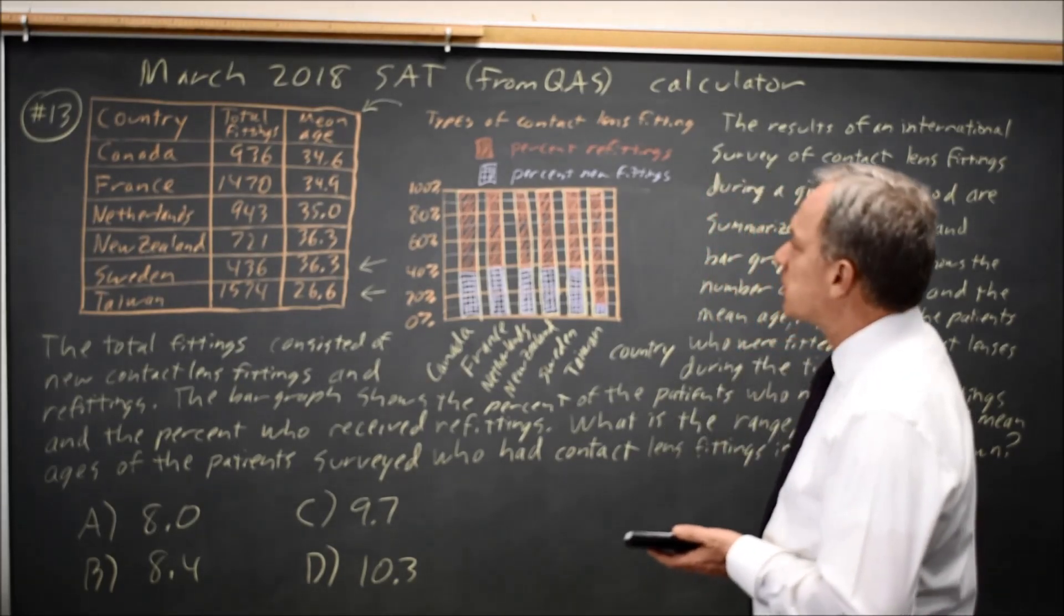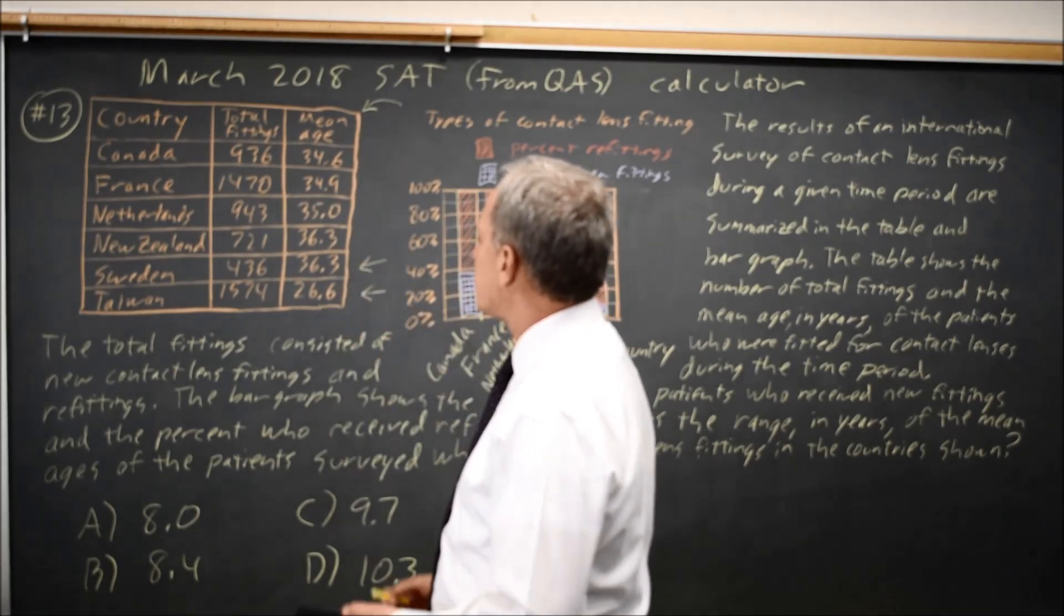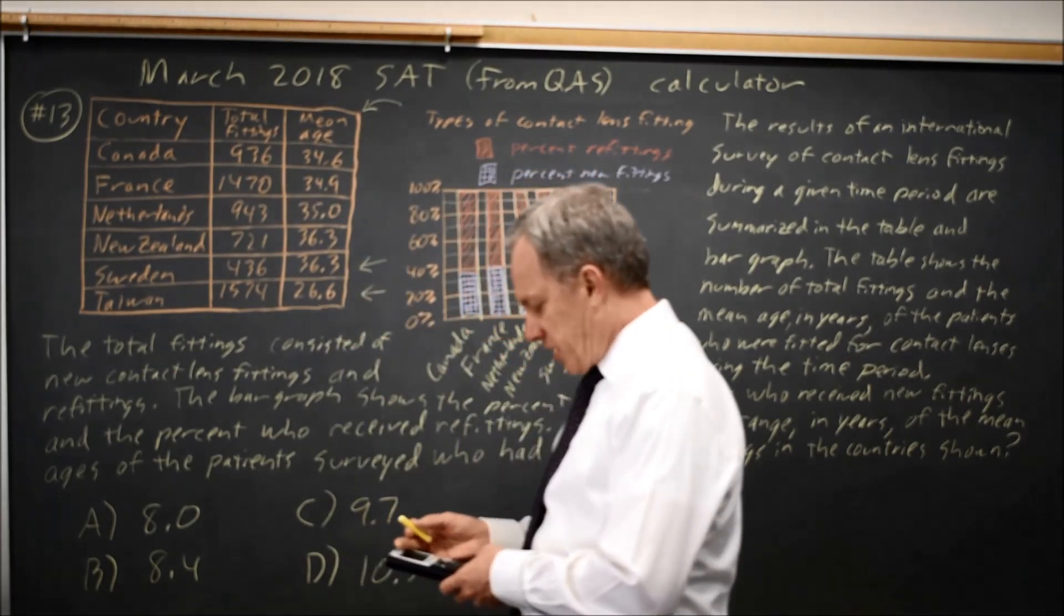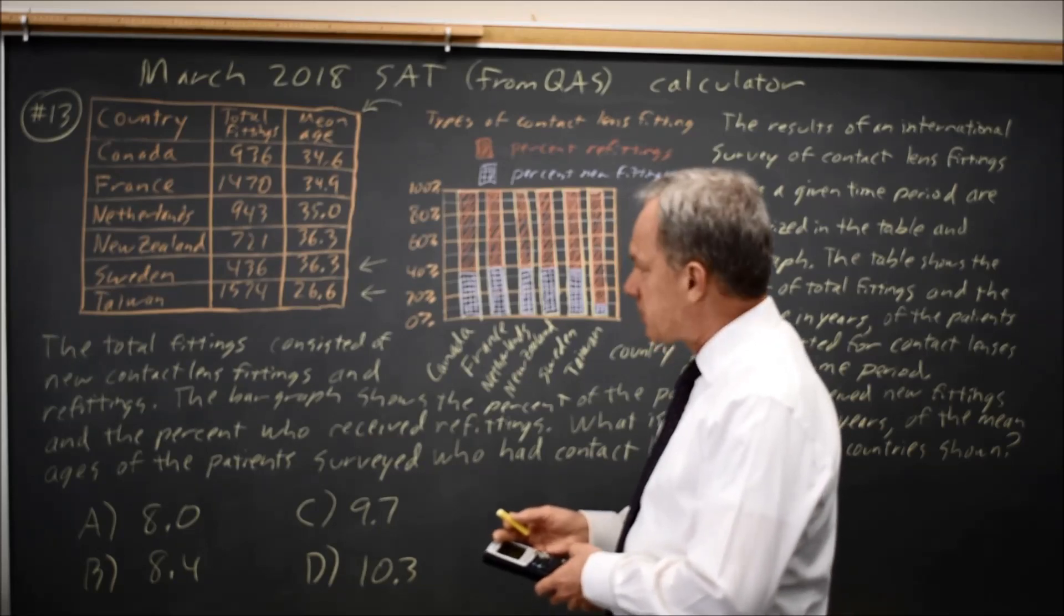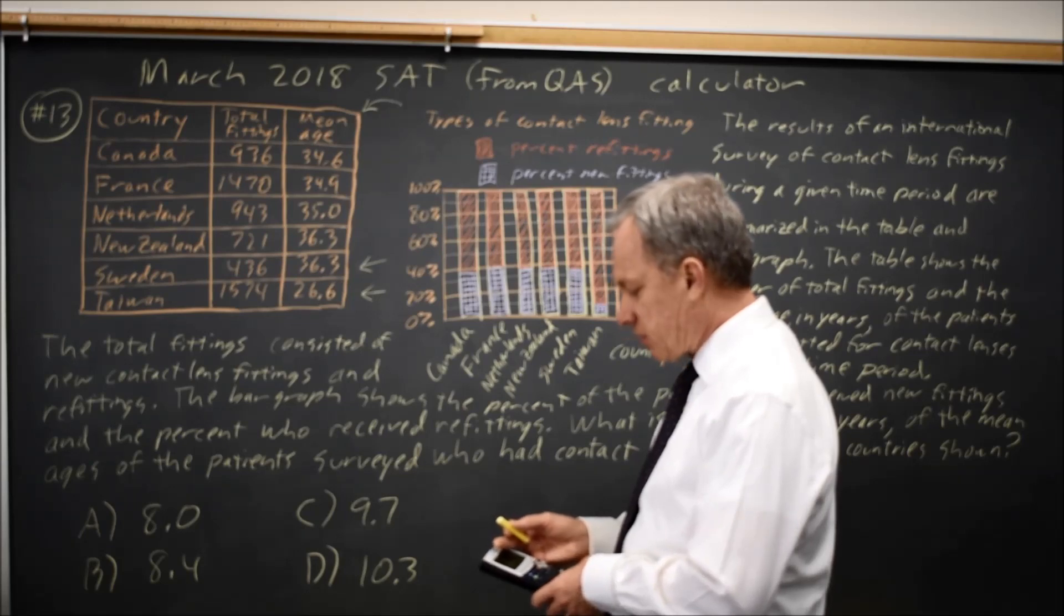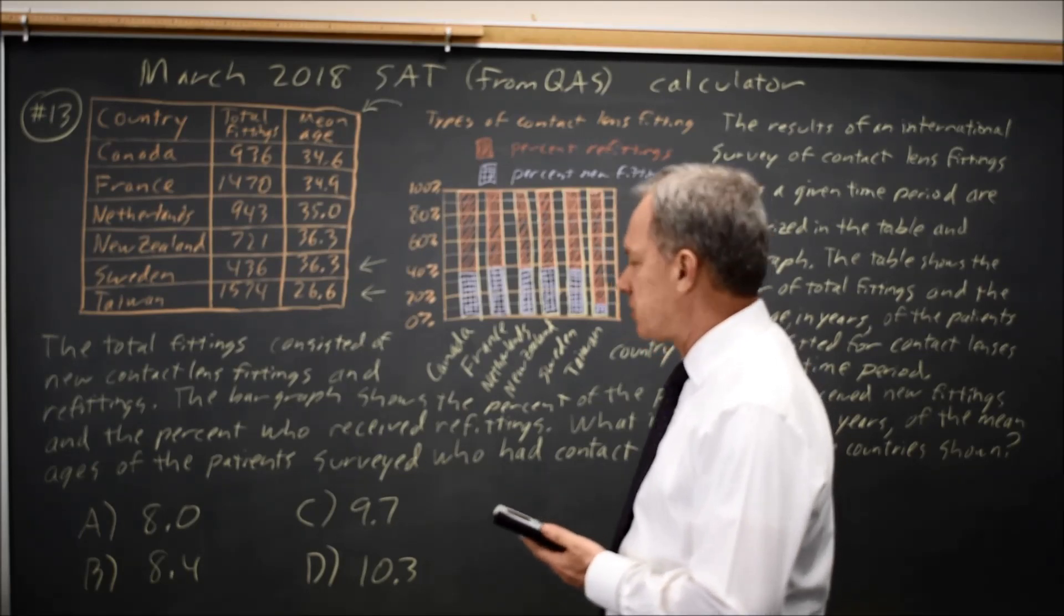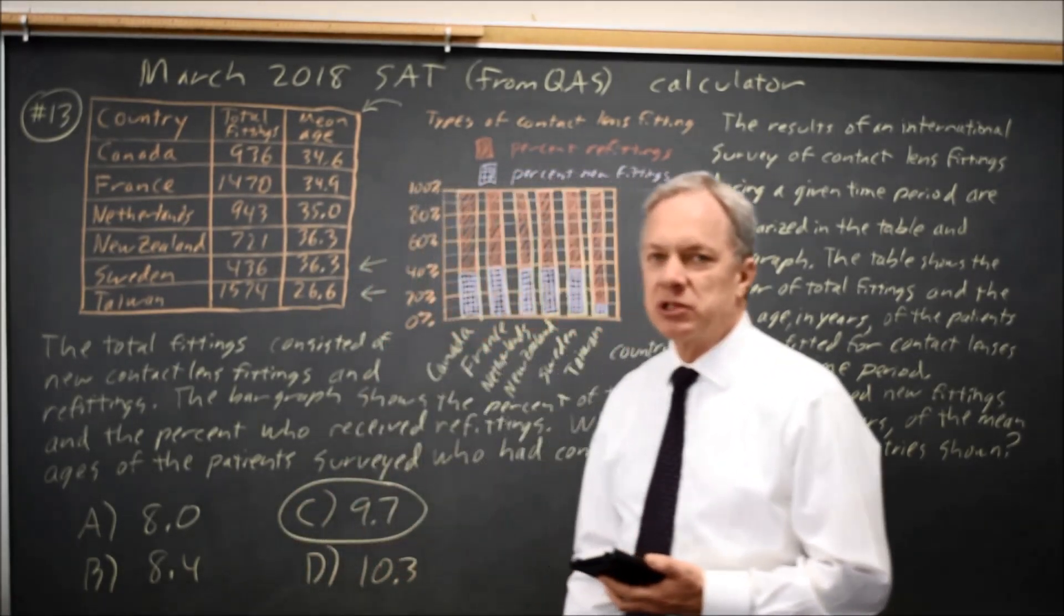In this case the list is short enough that we can quickly check there's nothing below 26.6, there's nothing above 36.3, so on my calculator 36.3 minus 26.6. The range is the difference between the largest and the smallest value. So the range of age is 9.7.